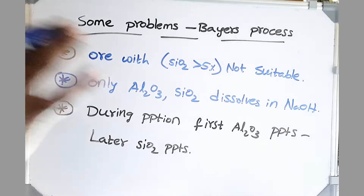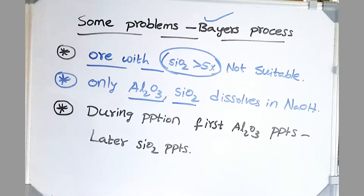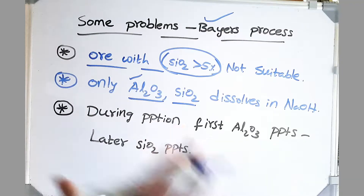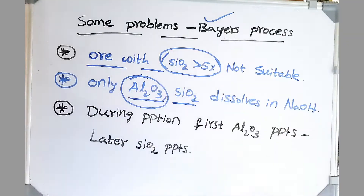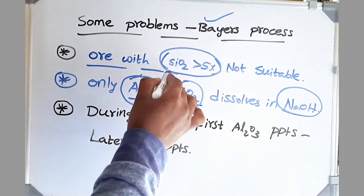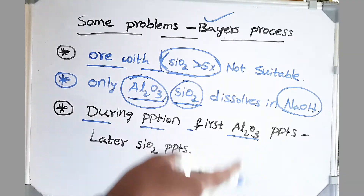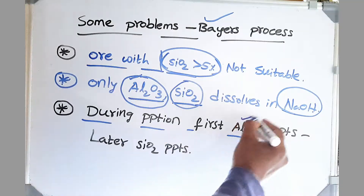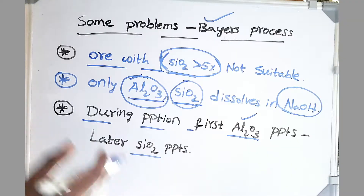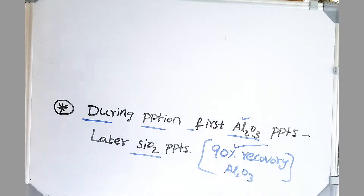Now let's see some problems faced in Bayer's process. If our ore consists of more than 5% SiO2, it is not suitable to purify using Bayer's process, because silica also dissolves in NaOH. We want only Al2O3 to dissolve — that is the main purpose of leaching. But SiO2 also dissolves because it is acidic. If we have less than 5% SiO2, we use it. But during the precipitation phase, first Al2O3 precipitates because we provide Al2O3 nuclei. Later, SiO2 also precipitates. To avoid this, we do not complete the precipitation process — we stop at 90% recovery of Al2O3 to prevent any SiO2 precipitation.